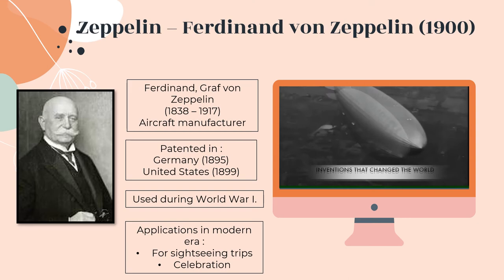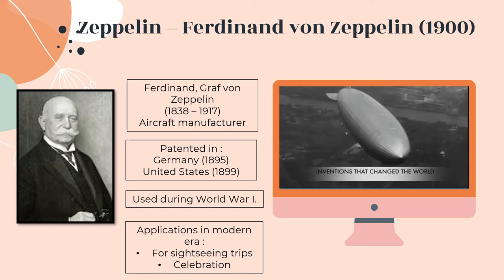We will first start with zeppelins. A zeppelin is a type of airship named after its inventor, Ferdinand von Zeppelin. It was an object that was very light and filled with hydrogen gas, held together by steel. Ferdinand von Zeppelin was a retired German general who became an aircraft manufacturer due to his interest in airship development starting in 1874. The zeppelin had its first flight on July 2nd, 1900 in Germany and was only produced commercially in 1910. During WWI, the German military used this invention as bombers called Zeppelin bombs, proving that technology influences a war's outcome. Nowadays, zeppelins are mostly used for sightseeing trips and celebrations.